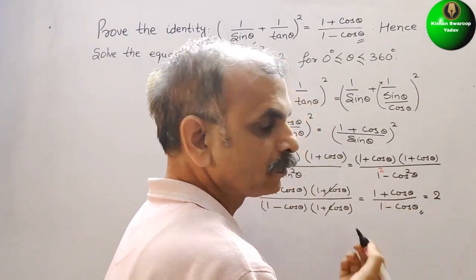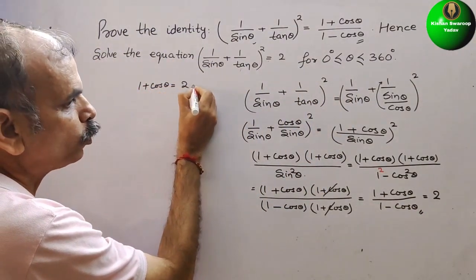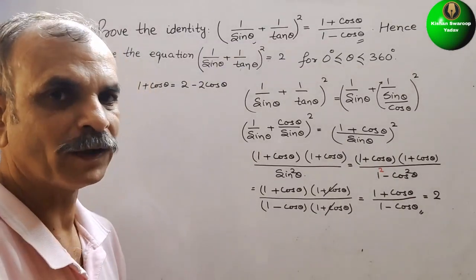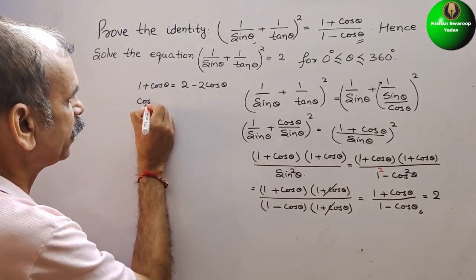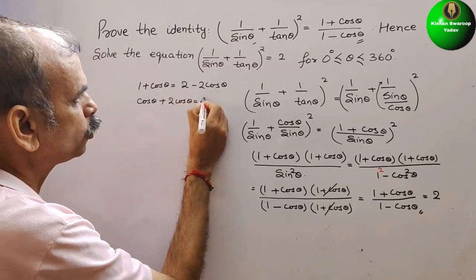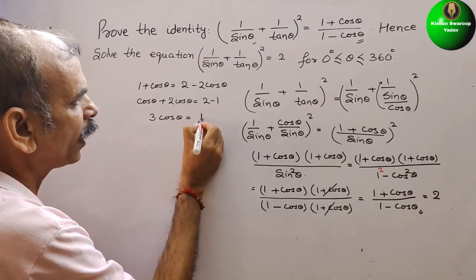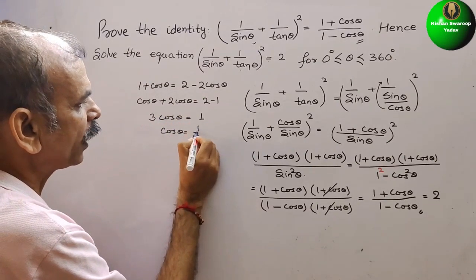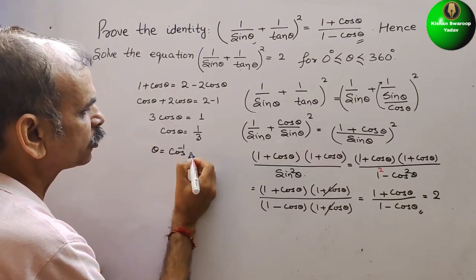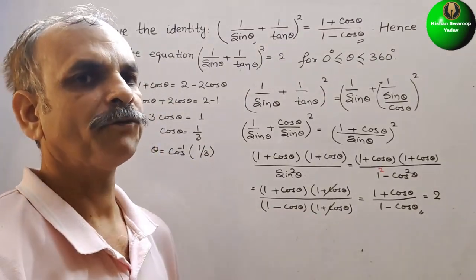Cross multiplying: 1 + cos θ = 2 − 2cos θ. Bringing cos θ to one side: cos θ + 2cos θ = 2 − 1, so 3cos θ = 1, therefore cos θ = 1/3. So θ = cos⁻¹(1/3).